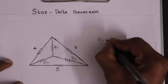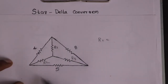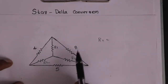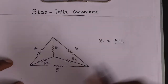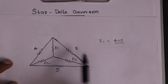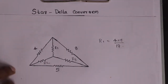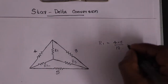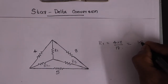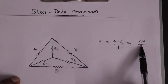R1 is equal to — the adjacent resistors: the resistance is equal to 12 plus 5, which is 17. Then 4 into 8 divided by 17. The value is 1.88 ohms. R1 is equal to 1.88 ohms.